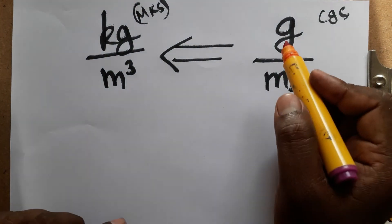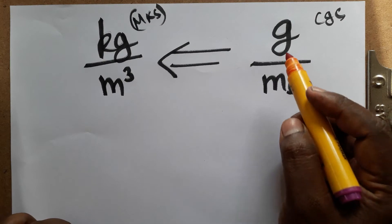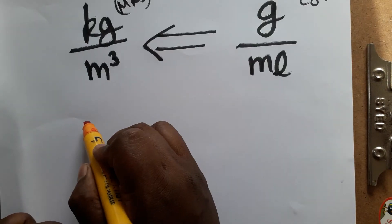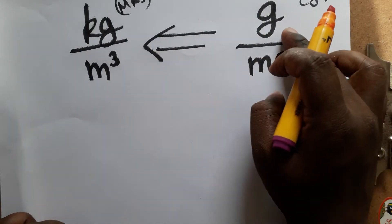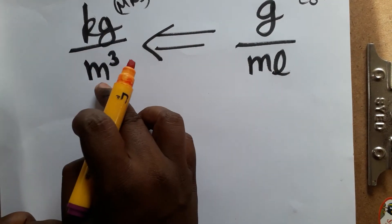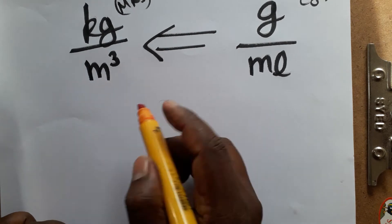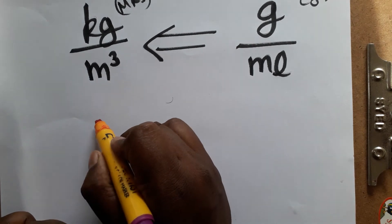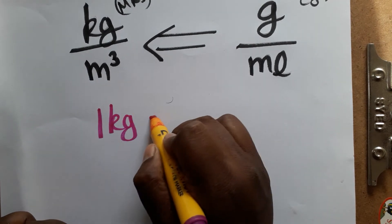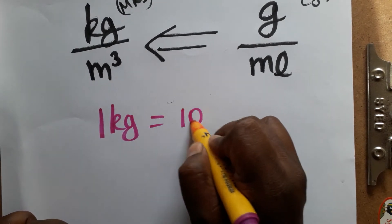First we have to convert mL to meter cube. We'll convert gram to kilogram, then mL to meter cube. One kilogram is a thousand grams.